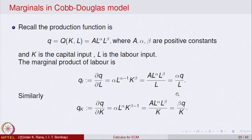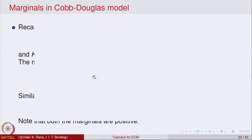Let us see an interpretation of this. Both marginals are positive because alpha, K (Q), L, and beta are all positive constants. From the previous equations, we can calculate alpha as L times the partial derivative of Q with respect to L divided by Q, and similarly beta as K times the partial derivative of Q with respect to K divided by Q.